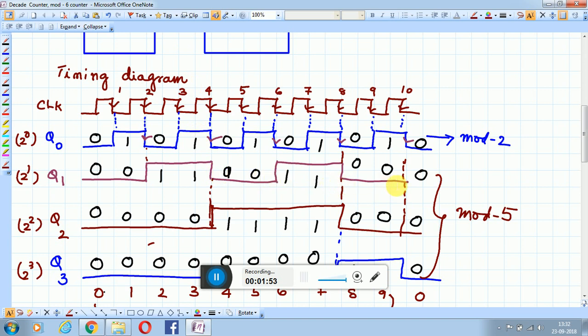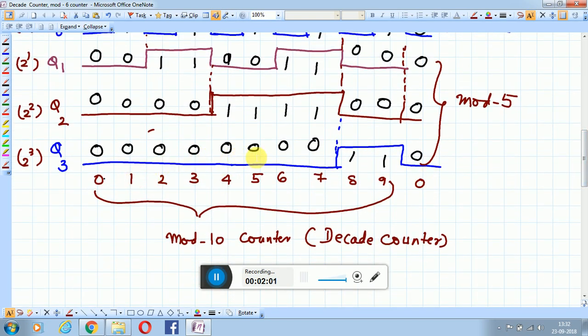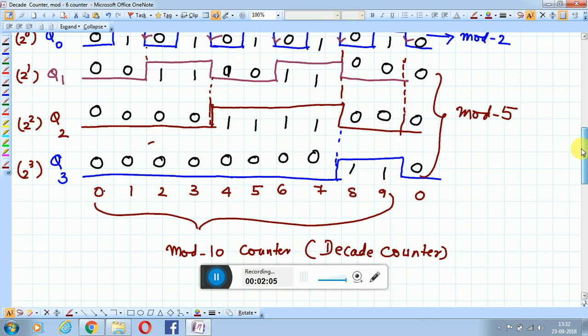Copying the same sequence shown in the diagram. In the counter, the outputs represent different bit positions: 2 power 0, 2 power 1, and 2 power 2.